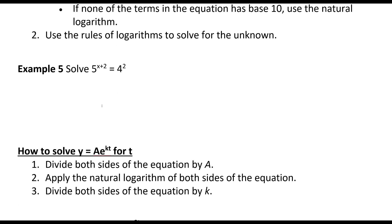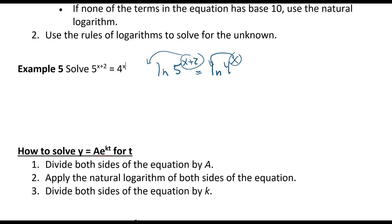Let's solve this one. This is not base 10, so following the steps, we take the natural log of both sides: natural log of 5^(x+2) equals natural log of 4^x. The powers come out front, so we have (x+2) times natural log of 5 equals x times natural log of 4.